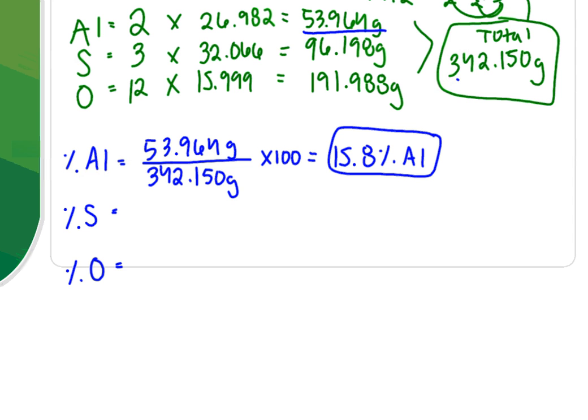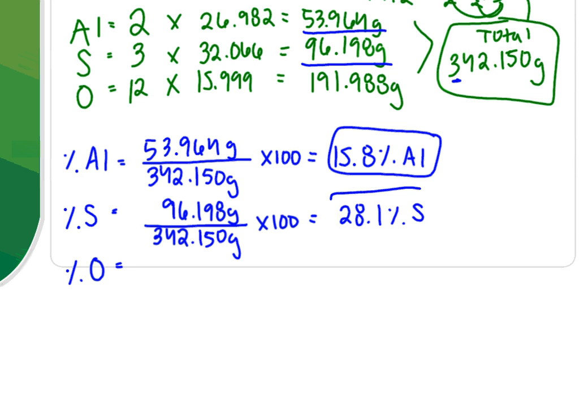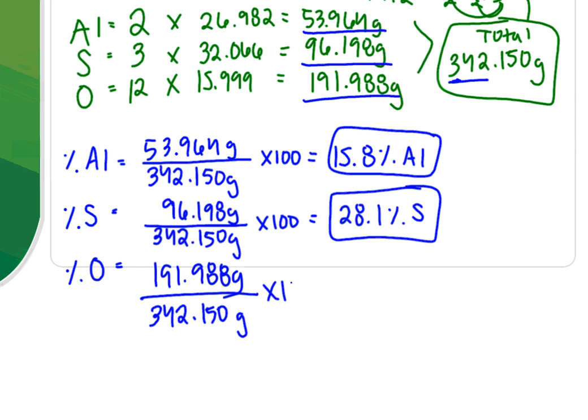I'm going to continue. I have to do it for sulfur now. So I know that the total mass of sulfur was 96.198 grams divided by the total mass of the entire compound, 342.150 grams times 100, gives me a percentage of sulfur, which is 28.1%. And then lastly, oxygen. So the mass of oxygen was 191.988 grams divided by the total, 342.150 grams times 100. And I get a grand total of 56.1% oxygen.